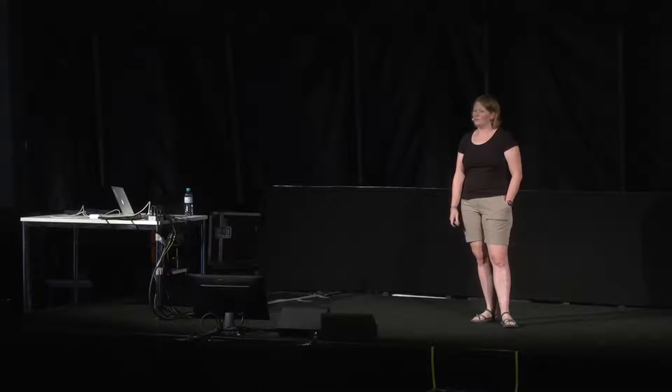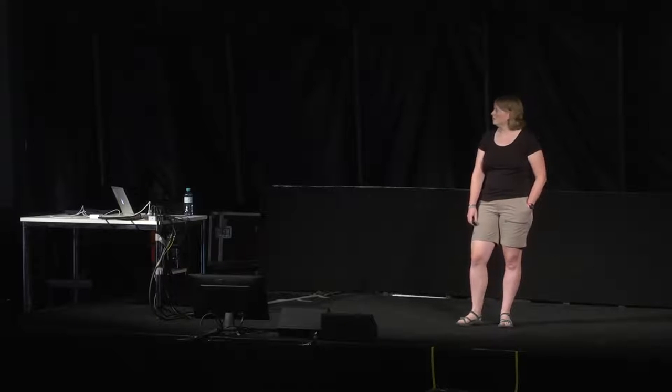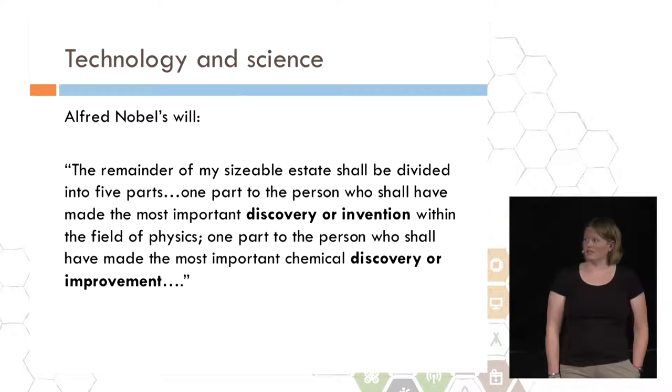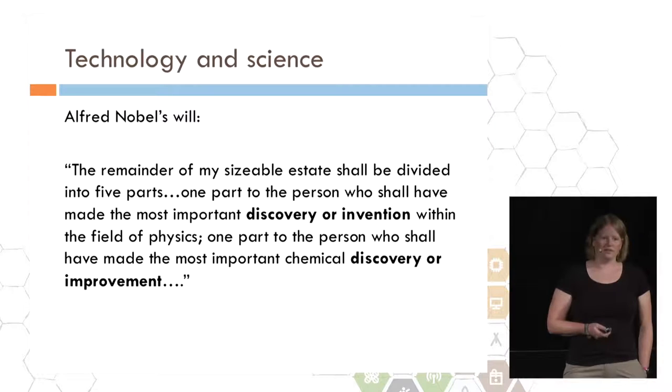One person a long time ago actually realized how important technology is to science and vice versa. This is an excerpt from Alfred Nobel's will discussing how he wants his money left. The thing to point out here is that he said that his money should be left for the most important discoveries or inventions or discoveries or improvements, not necessarily the most profound science.